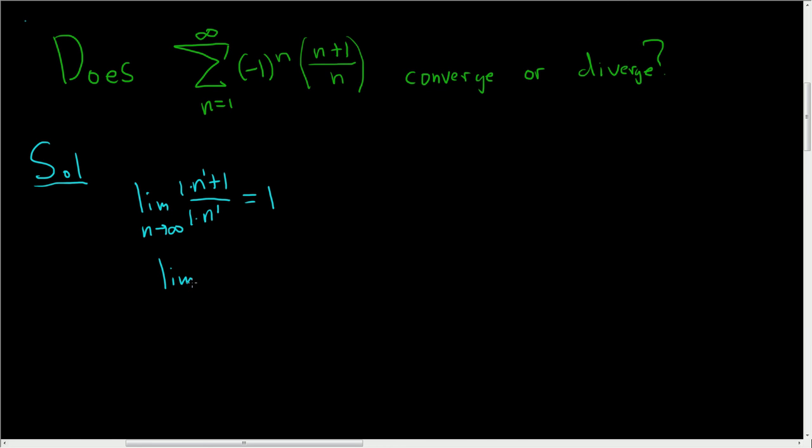So that means that this limit, the limit of a sub n, and this entire piece here is a sub n, well this is the limit as n approaches infinity of negative 1 to the n times n plus 1 over n.